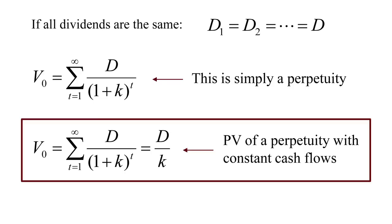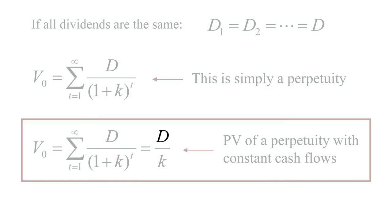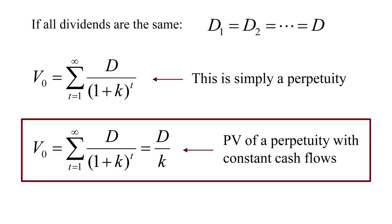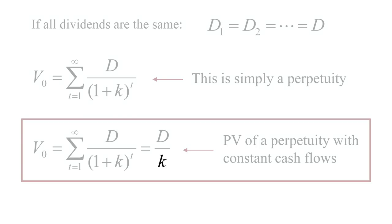A couple of things to note here before we move on. The higher the dividend, the more valuable the stock. D in the numerator shows that if D goes up, the value of the stock goes up. A stock that pays a higher dividend should be more valuable than a stock that pays a lower dividend, holding everything else constant.